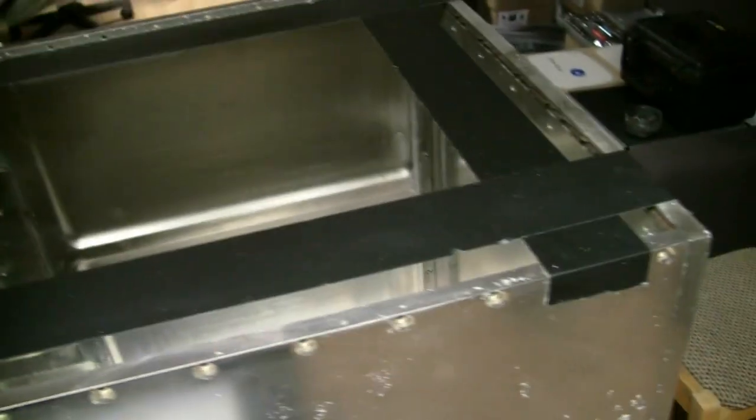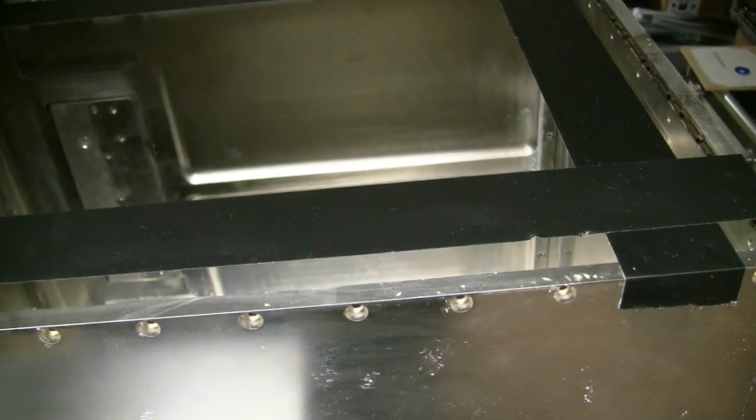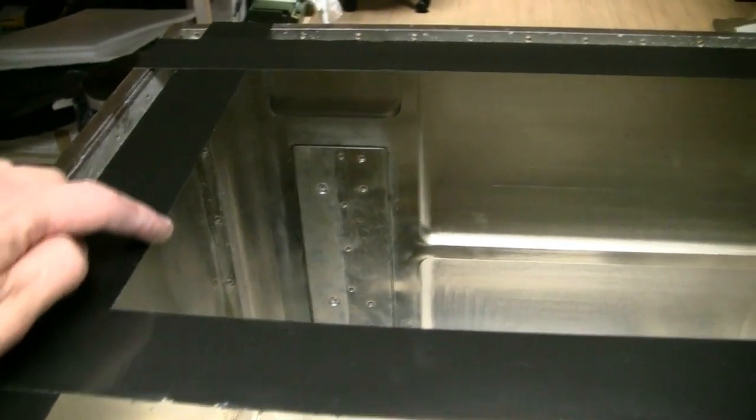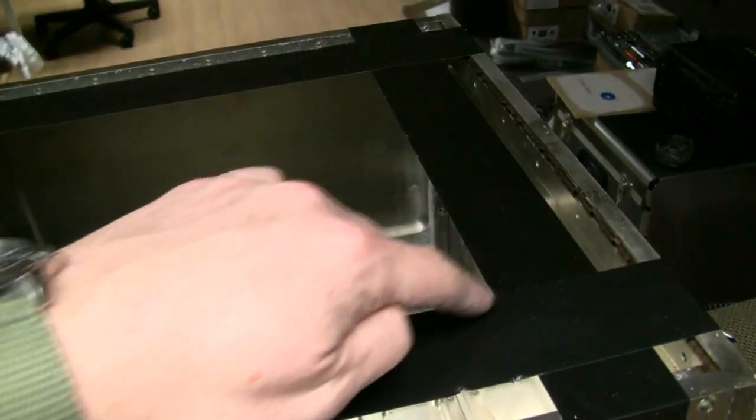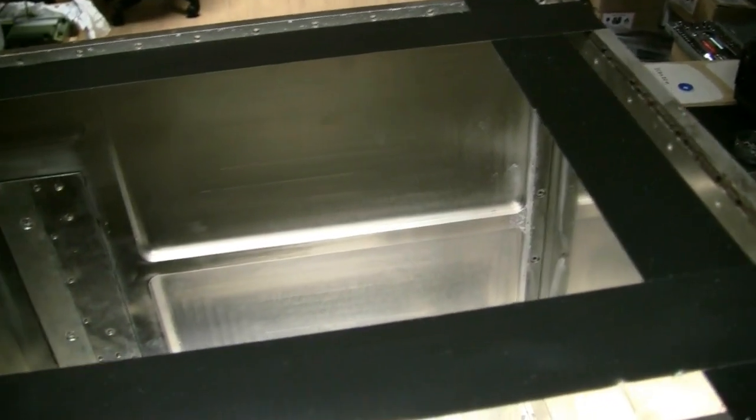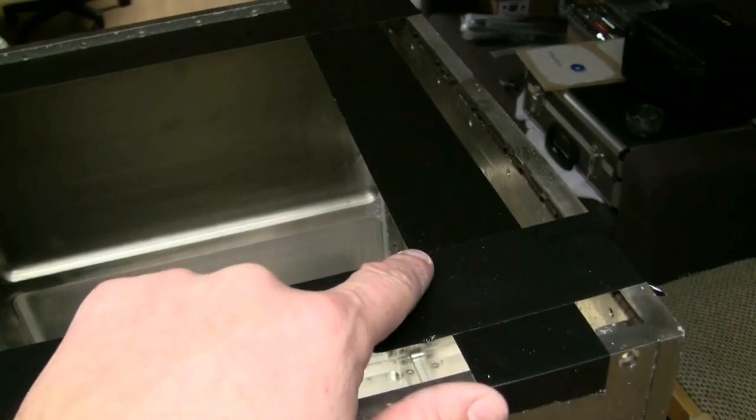This tape here marks out my usable kiln area, which is approximately 350 mil by 220 mil by pretty much as deep as I want it because the box is pretty deep.